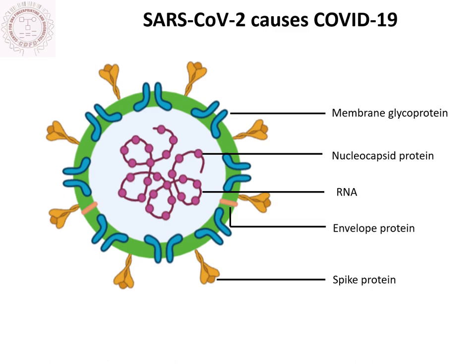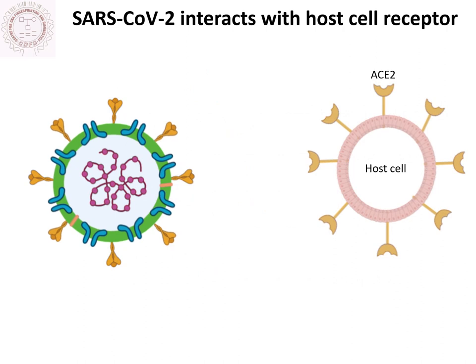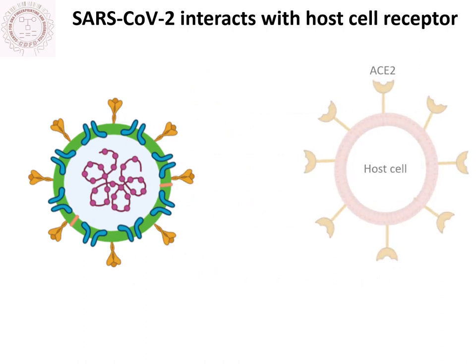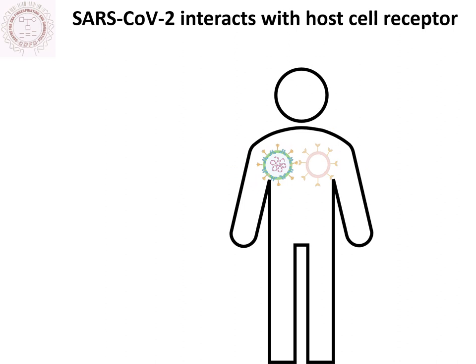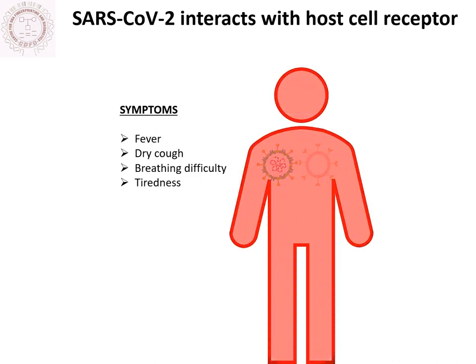Studies have identified that virus spike proteins interact with the host cell receptor angiotensin-converting enzyme, i.e., ACE2. ACE2 is present on respiratory and intestinal cells, and the spike protein binds with ACE2 to thereby infect humans. Most infected individuals experience fever, dry cough, breathing difficulties, and tiredness.